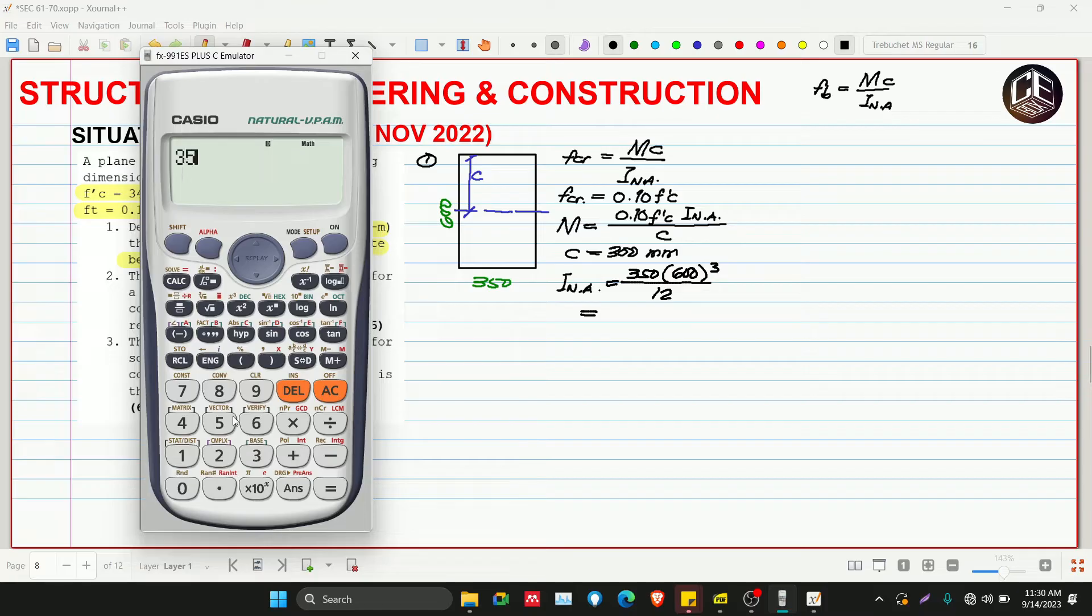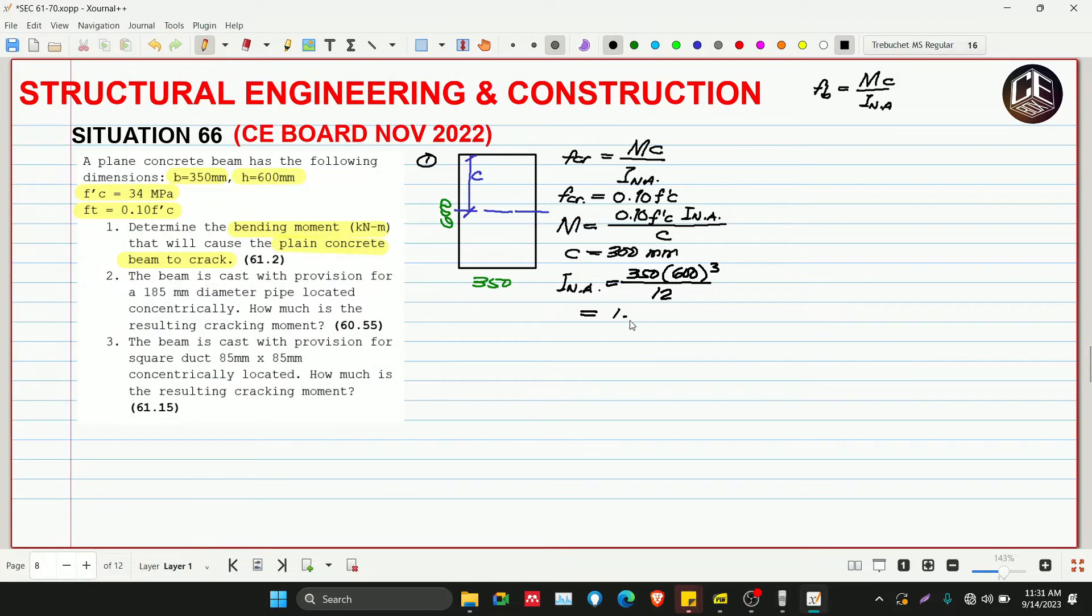350 times 600 cubed over 12. You should get used to moment of inertia being times 10 raised to 6 or times 10 raised to 9. It's okay to make the values we're using in our solution smaller. This is 6.3 times 10 raised to 9 millimeter to the fourth.